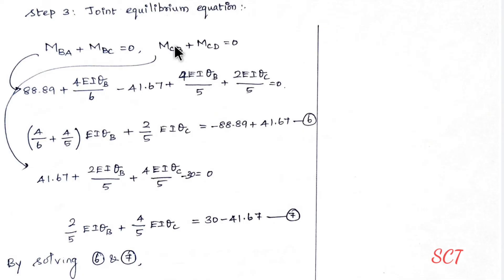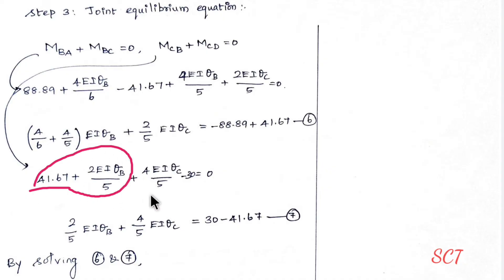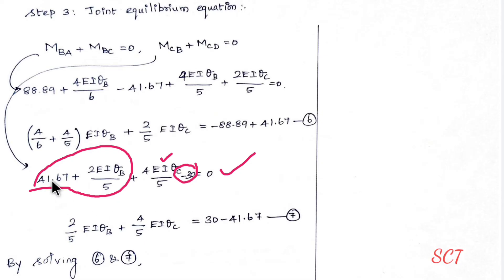Substituting further: 41.67 with EI·θ_B and 4EI·θ_C terms. For joint C equilibrium with M_CB + M_CD = 0, substituting M_CD = minus 30: right-hand side becomes plus 30, plus 41.67, plus 41.67, minus 41.67. This gives equation number 7.